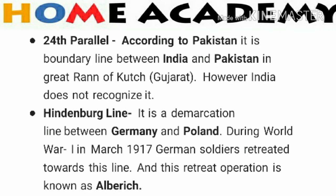The next important boundary is the 24th Parallel. According to Pakistan, it is a boundary line between India and Pakistan in the Rann of Kutch region of Gujarat. However, India does not recognize this line — only Pakistan acknowledges the 24th Parallel.